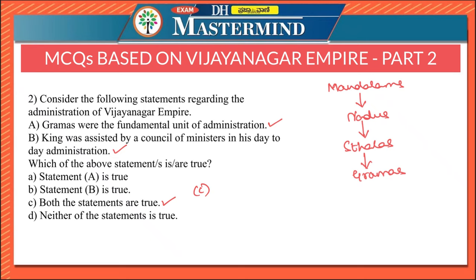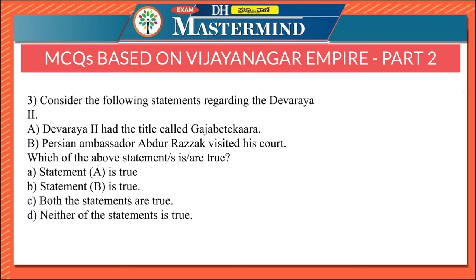The mandalums had governors called mandalashvara or nayaka — please remember this name. Vijayanagara rulers gave full powers to the local authorities in administration, and the king was assisted by a council of ministers in his day-to-day administration.